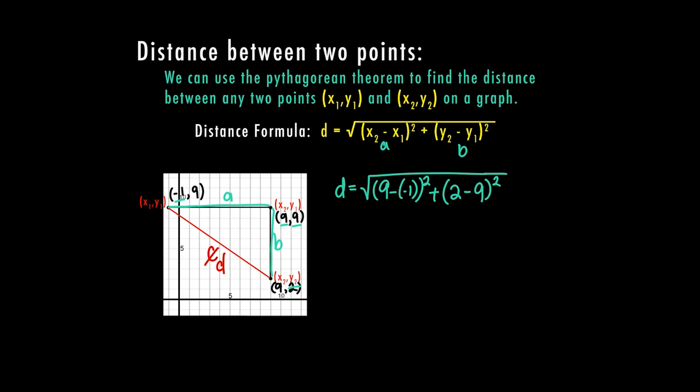So now I can go ahead and solve. So d = √[(9 - (-1))² + (2 - 9)²]. 9 minus a negative 1 is 9 plus 1, which is 10 squared, plus 2 minus 9 is -7. Now in this case, you're going to end up with the absolute value because -7 times -7 is also a positive 49.